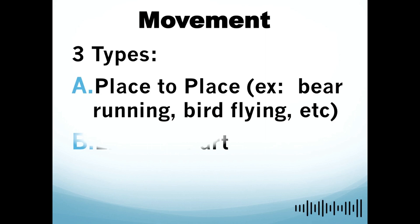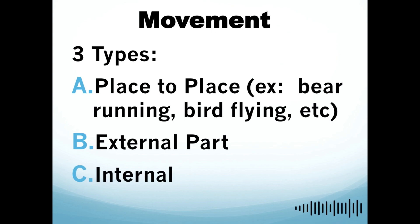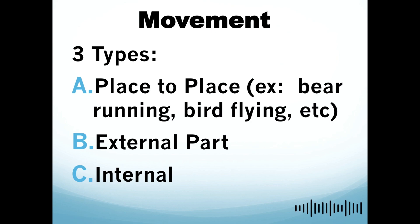For movement, we have three types. The first one is place to place, the second one is external, and the third one is internal. A good example of place to place movement is a bear running or birds flying — a bird moving from one place to another, or a bear moving from north to east.